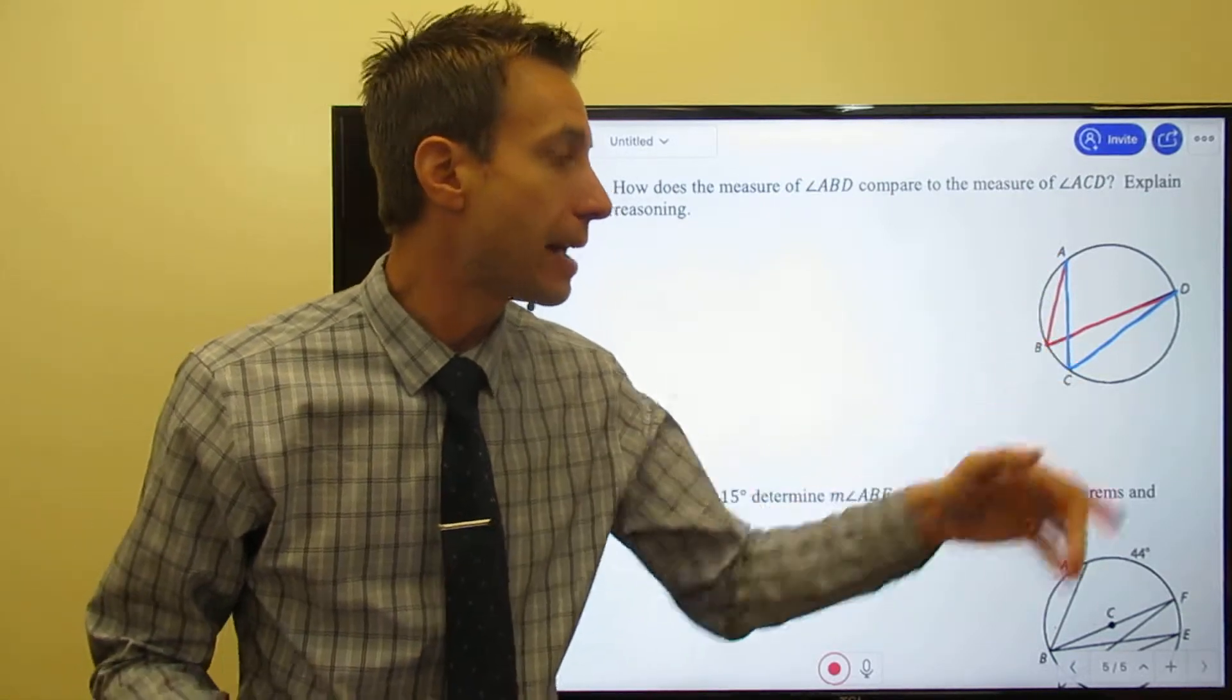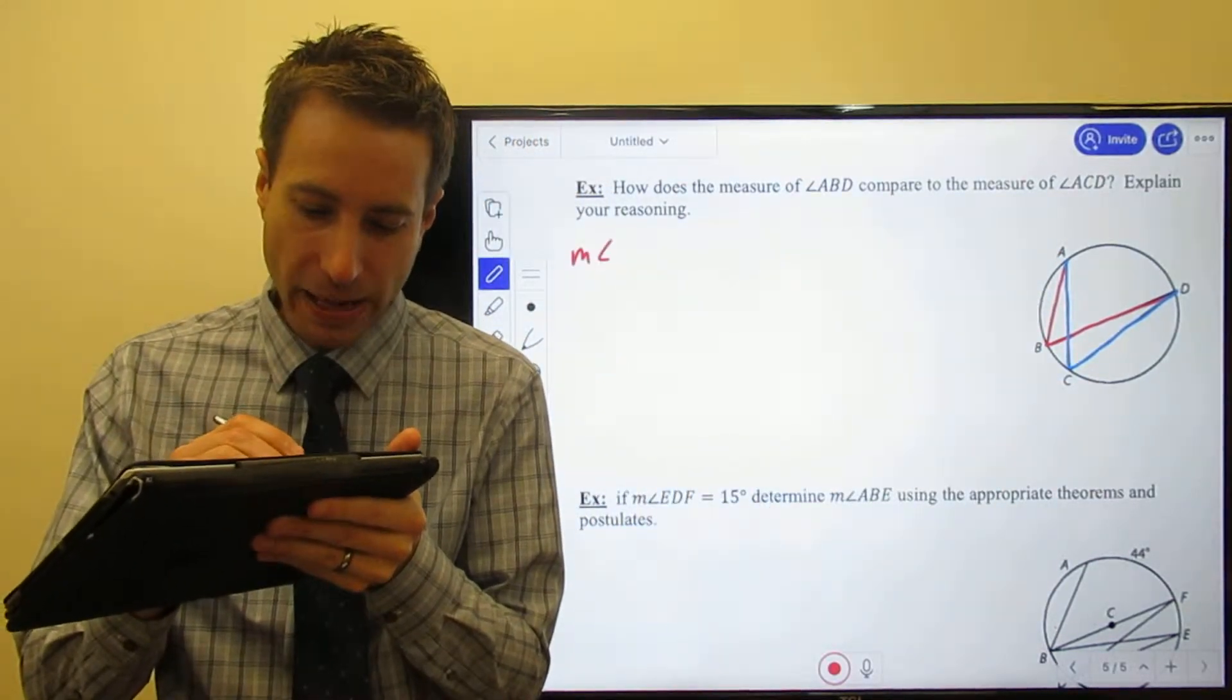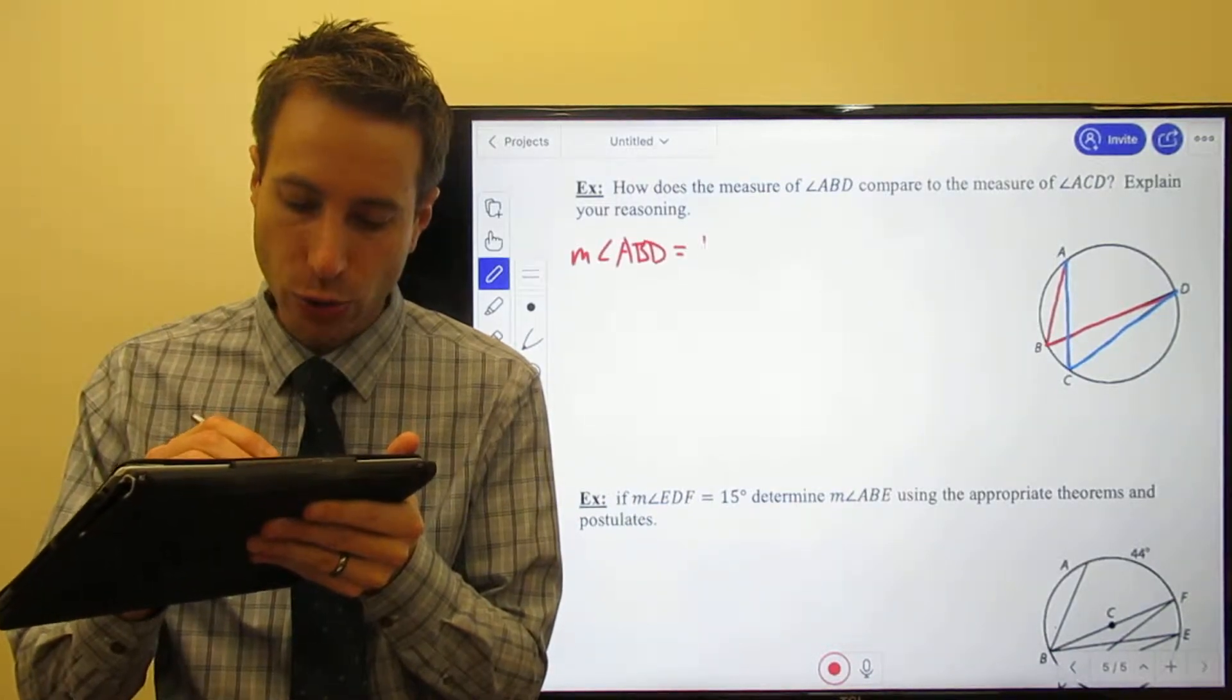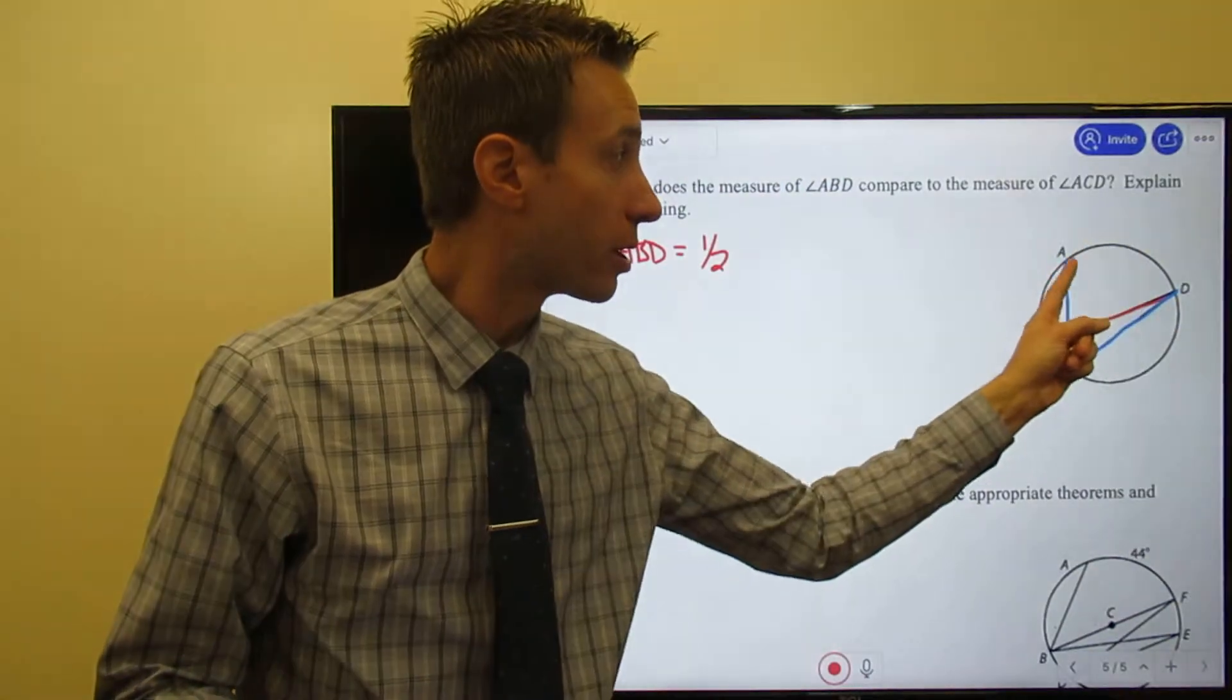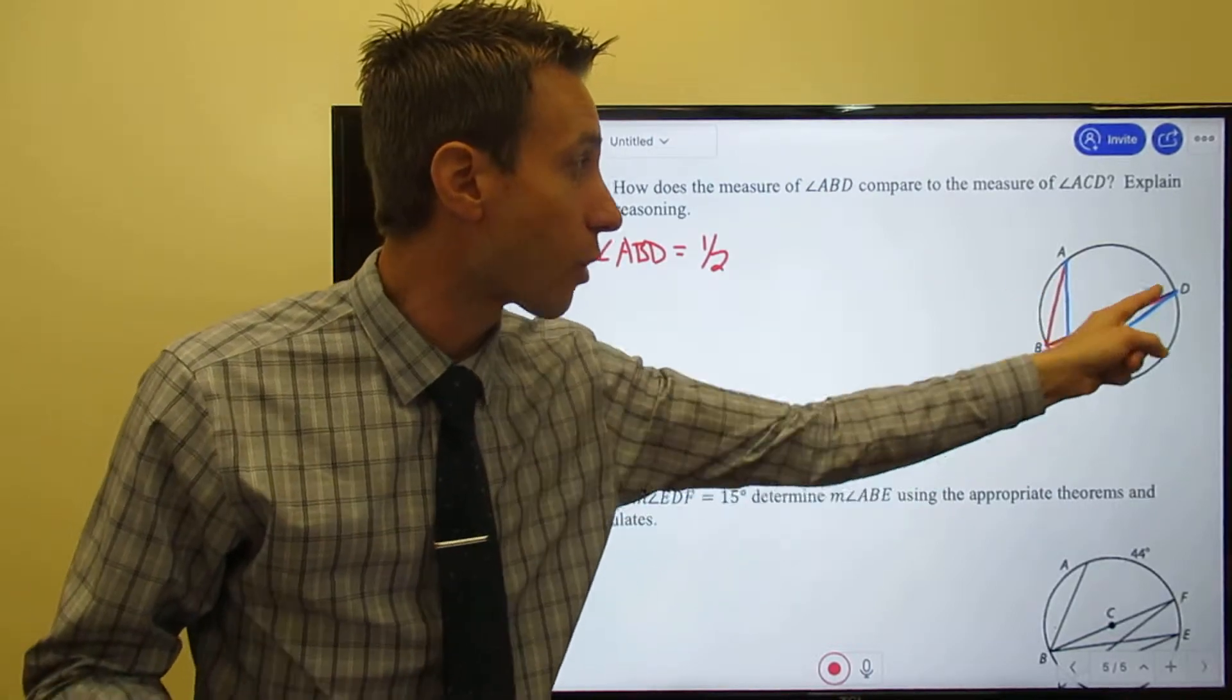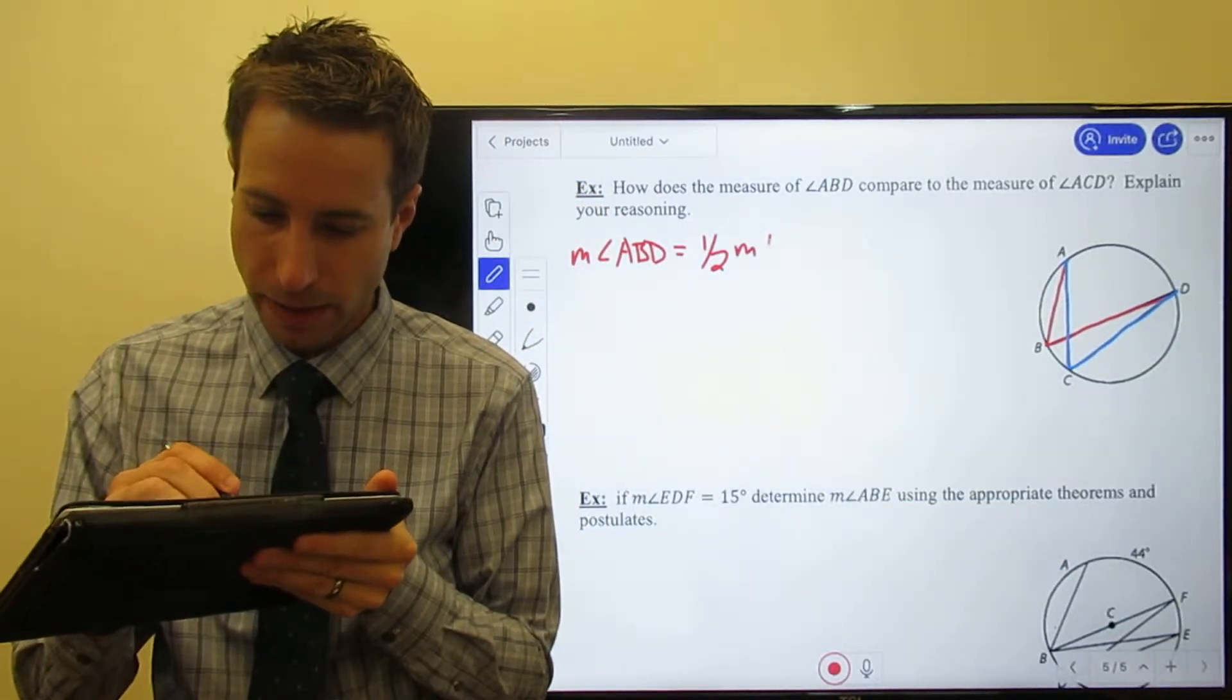First, we'll do ABD. So the measure of angle ABD is equal to one half, one half the arc that is created by that inscribed angle. So one half the measure of AD.